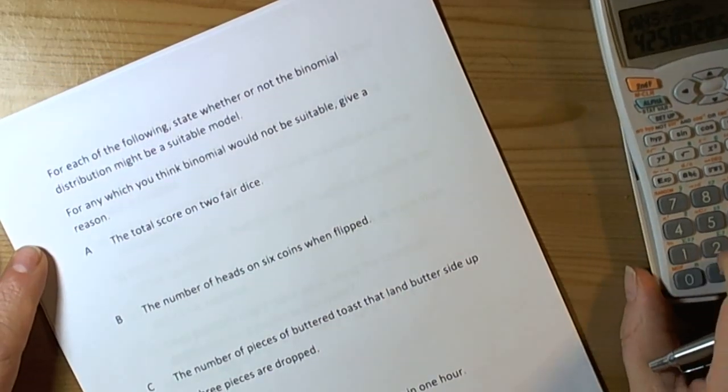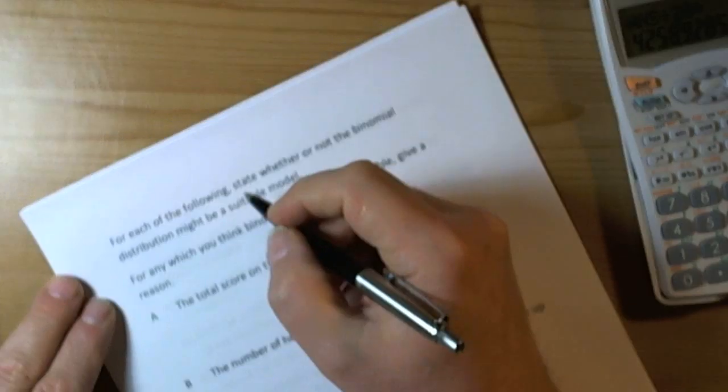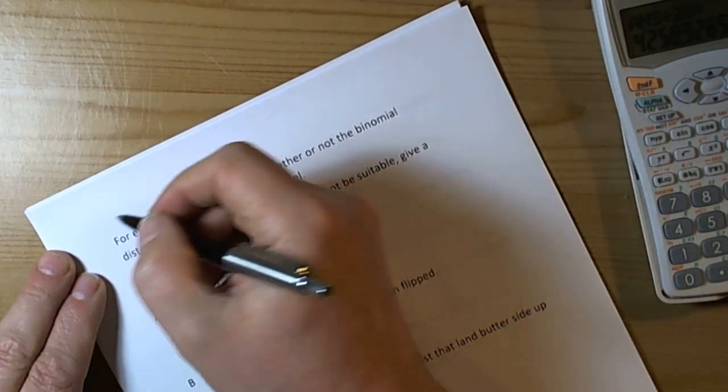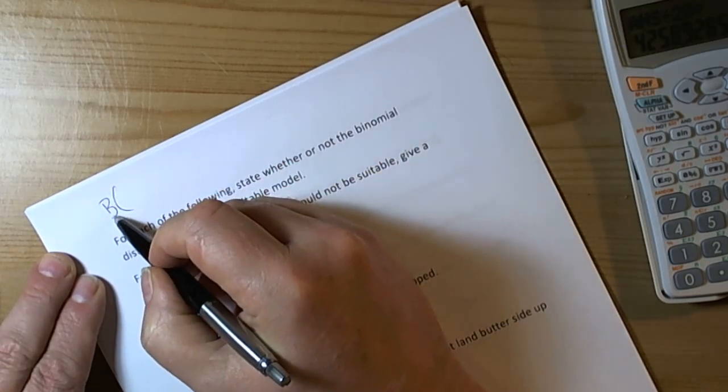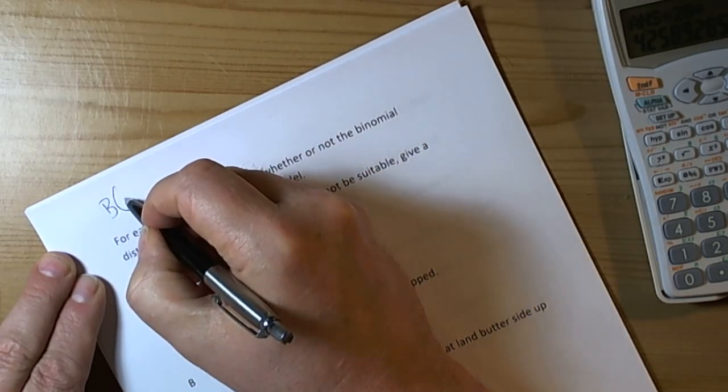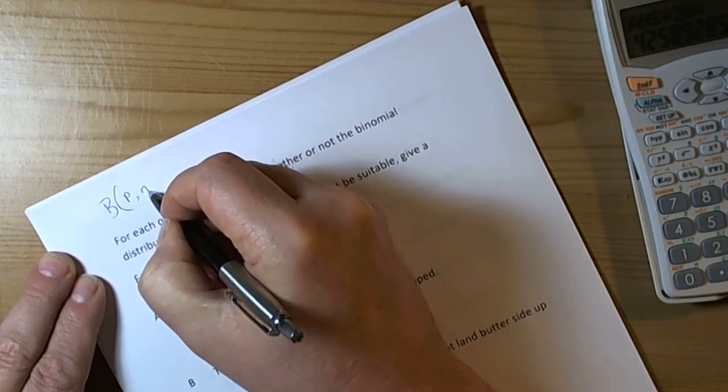This is a short summary of the lesson on binomial distribution. We have to remember some key things about the binomial distribution. In terms of language, we would be writing down that this is about a binomial distribution with a probability of success and a number of trials.